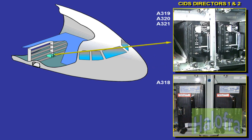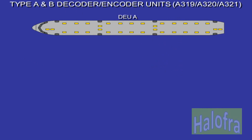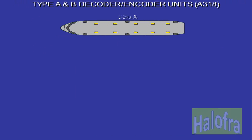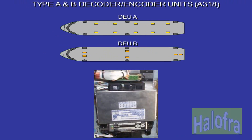CIDS Directors 1 and 2 are located on RAC 80 VU in the right-hand avionics bay. Type A and B decoder-encoder units, DEUs, are located above the cabin sealing panels. With the new CIDS, new type A and B DEUs are installed, with major differences regarding design, interfaces and reliability.